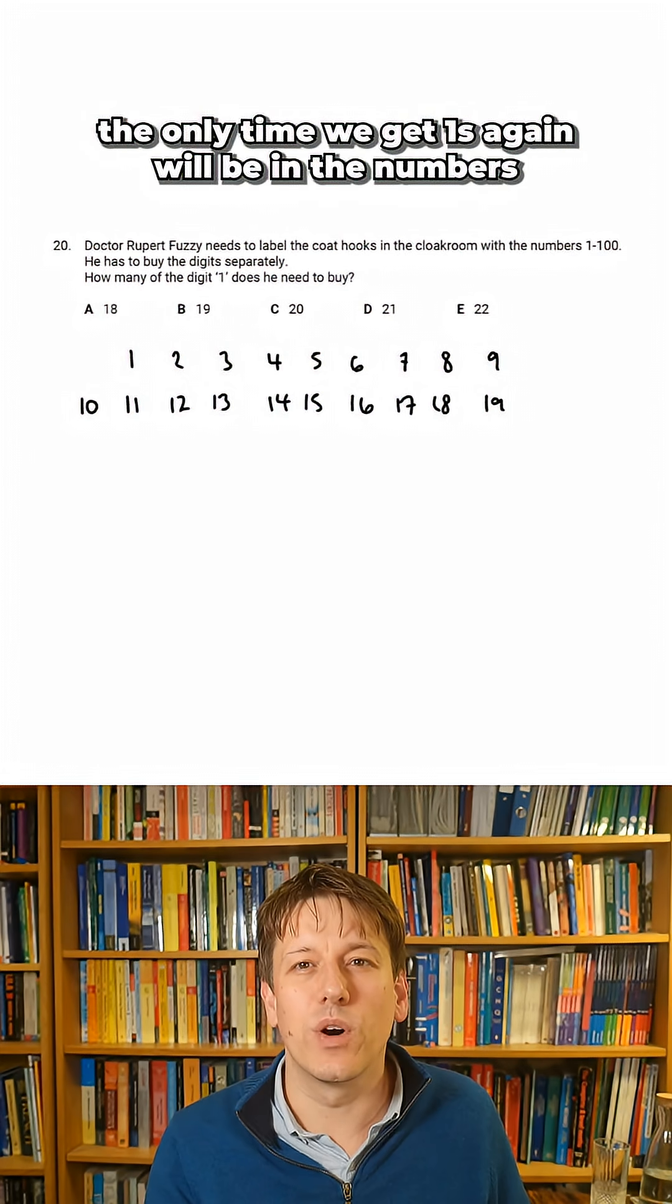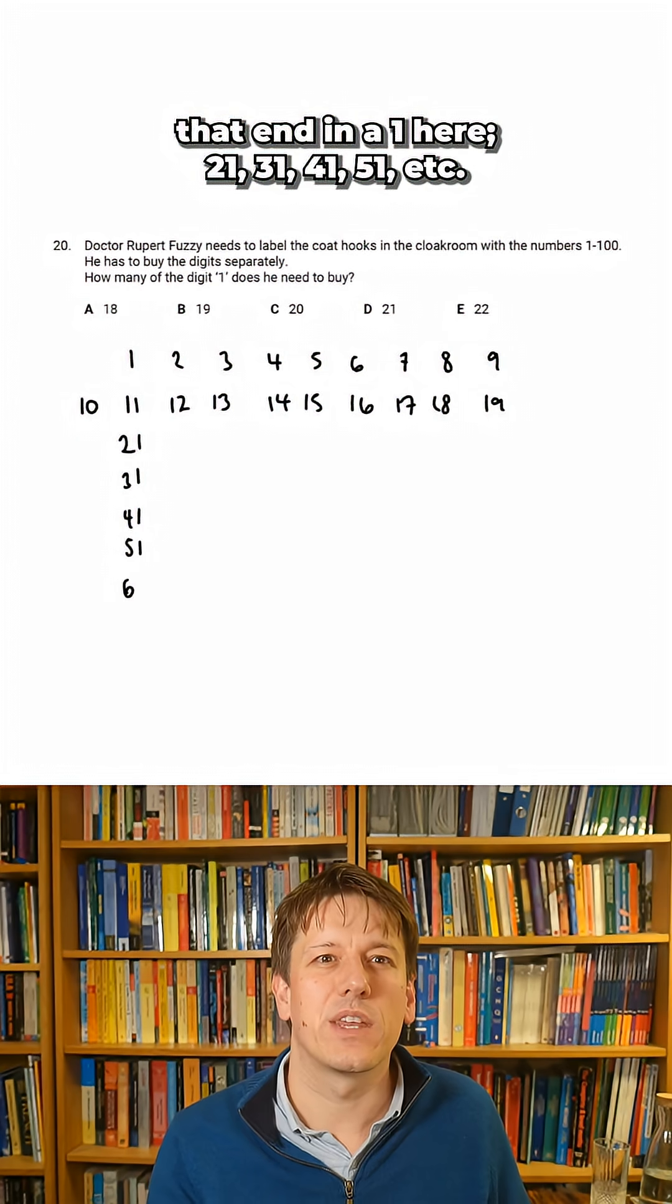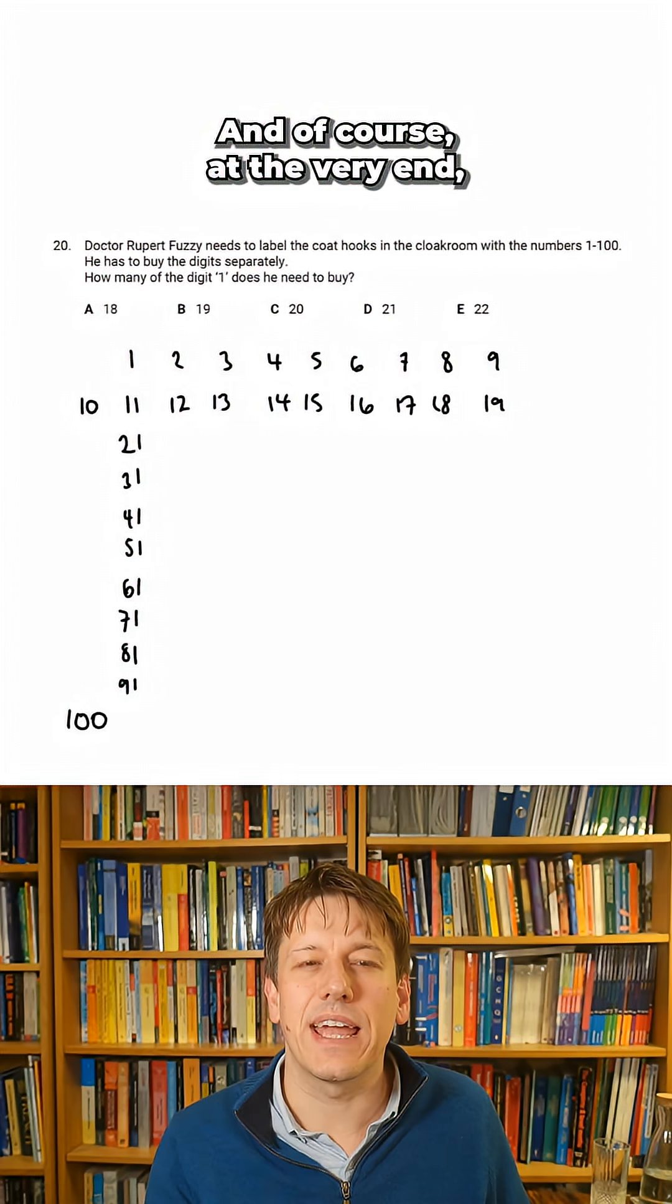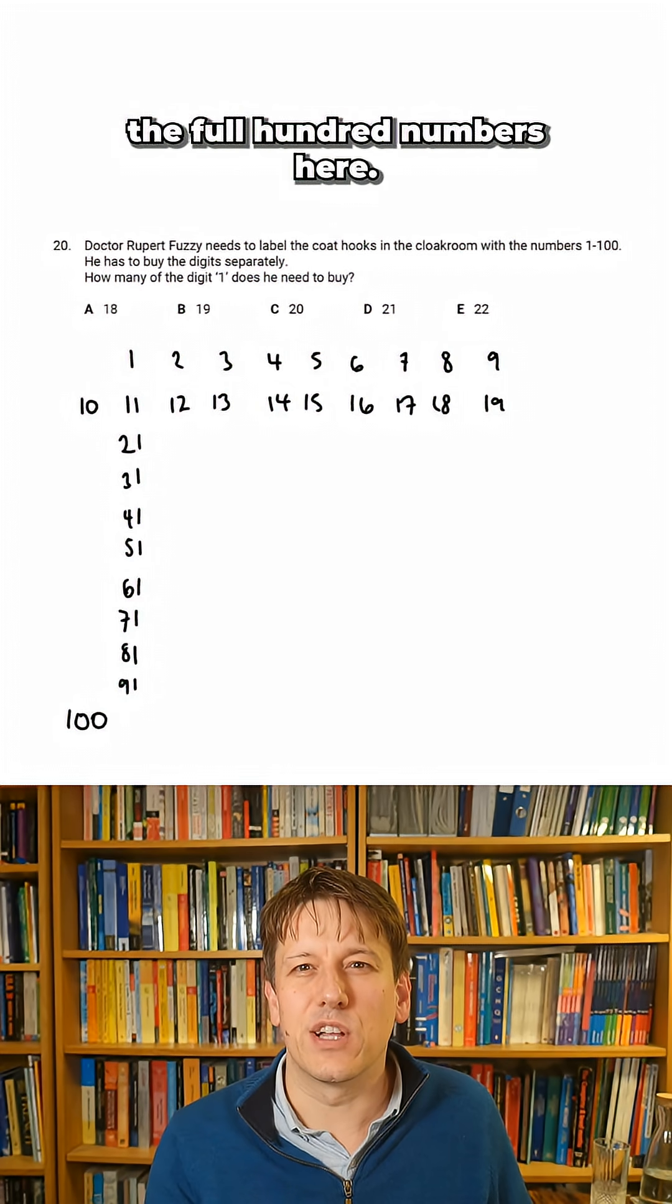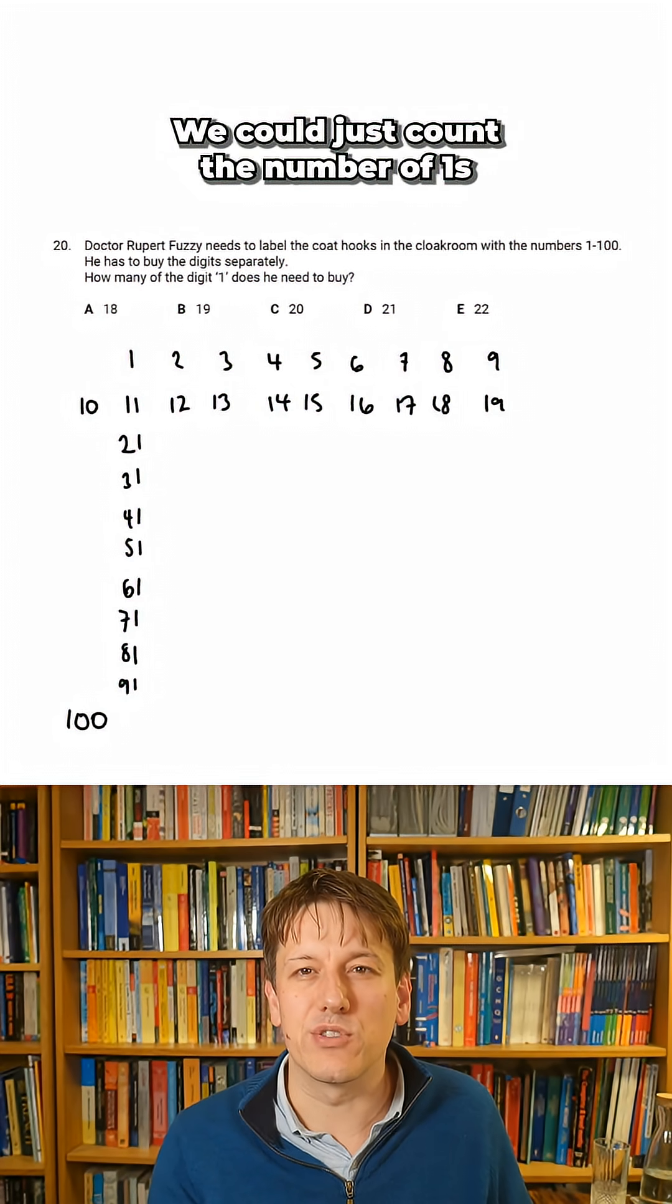And once we get past 19, the only time we get 1s again will be in the numbers that end in a 1 here, 21, 31, 41, 51, etc. And of course, at the very end, the 100 has a 1 in it. So I don't need to write out the full 100 numbers here. We could just count the number of 1s on the page here.